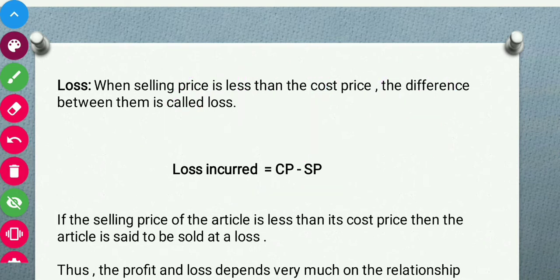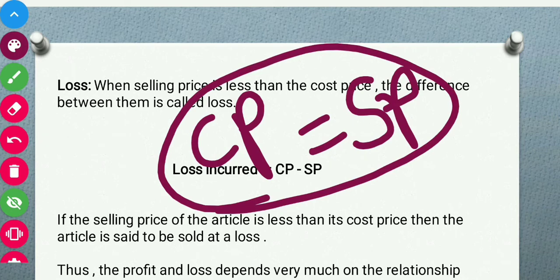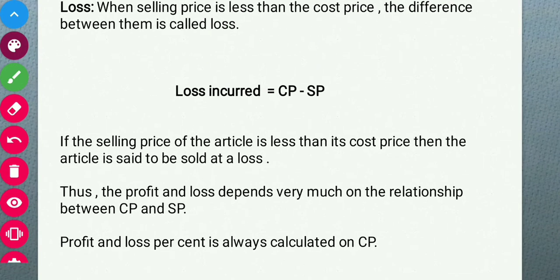If the selling price of the article is less than its cost price, then the article is sold at a loss. Sometimes the shopkeeper does not get a profit and also does not get a loss — in that case CP is equal to SP, so we say no loss, no profit. Profit and loss depend very much on the relationship between CP and SP: if CP is more and SP is less, it is a loss; if CP is less than SP, it is a profit.